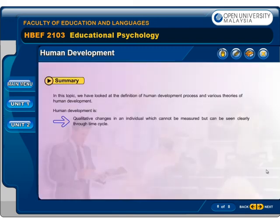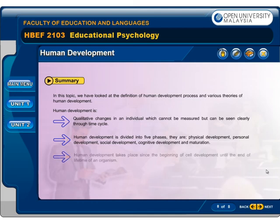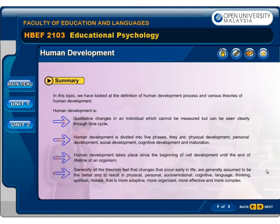In this topic, we have looked at the definition of human development process and various theories of human development. Human development is qualitative changes in an individual which cannot be measured but can be seen clearly through the time cycle. Human development is divided into five phases: physical development, personal development, social development, cognitive development, and maturation.